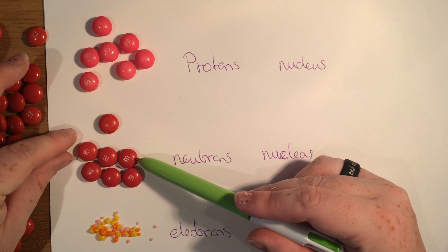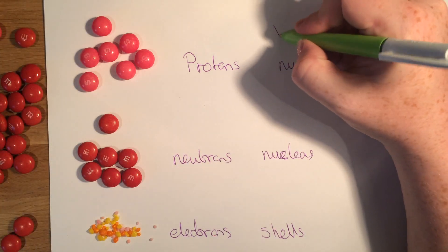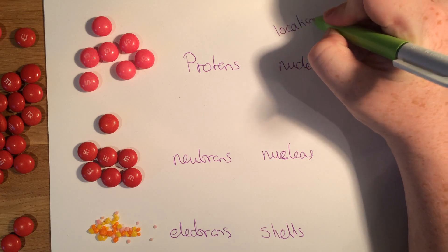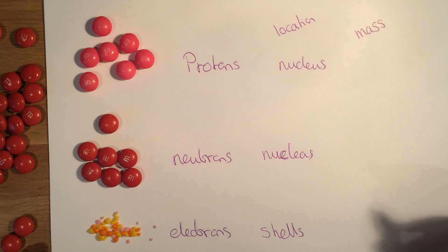Now the reason I've used M&Ms and Skittles for protons and neutrons is because they're about the same size. So that's their location. And now we're gonna talk about their mass.